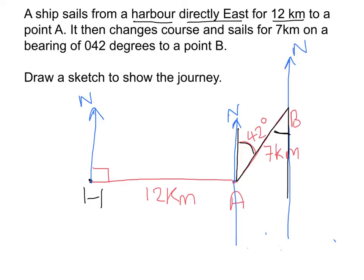For example, if we were trying to work out the bearing to go from B back to A, we'd measure from the north line clockwise all the way round to where the path to A is. From the Z shape, we know that angle inside is 42 degrees, and the straight line is obviously 180 degrees. So the bearing back would just be 42 plus 180, which is 222 degrees.